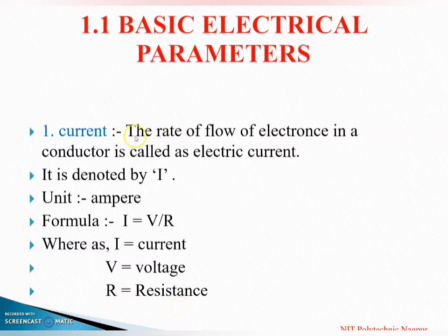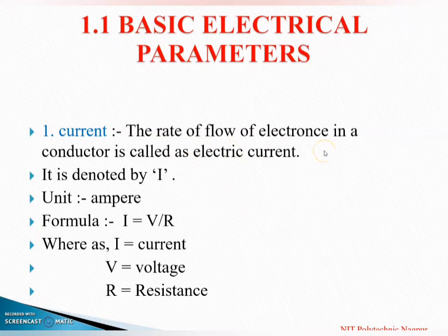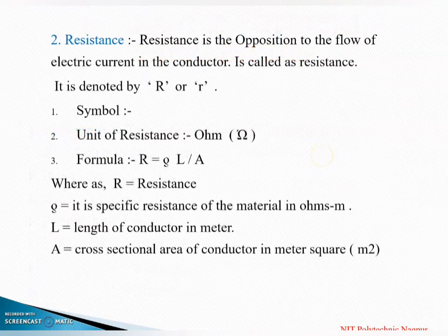Current यानि क्या होता है? जो rate of flow of electrons है, जो conductor से flow होते हैं, उसे हम current बोलते हैं. Next definition is resistance.